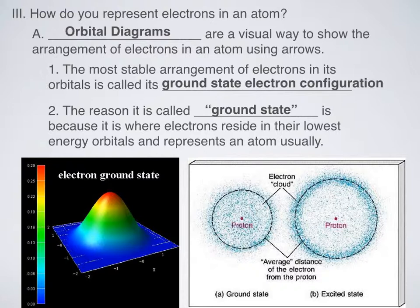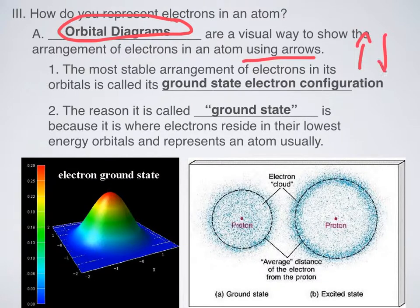So how can you represent electrons in an atom? There are actually two ways that we're going to learn to do that, but the first one that we're going to go over, they're called orbital diagrams, and that is a visual way to show the arrangement of electrons in an atom, and it uses arrows, specifically up arrows and down arrows, as we'll find out about in a second.